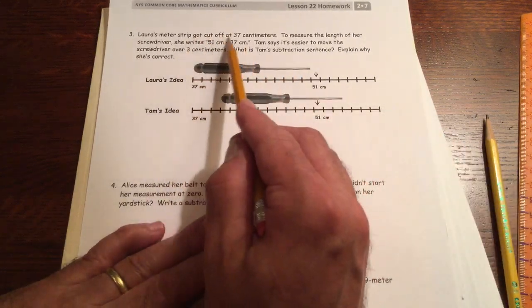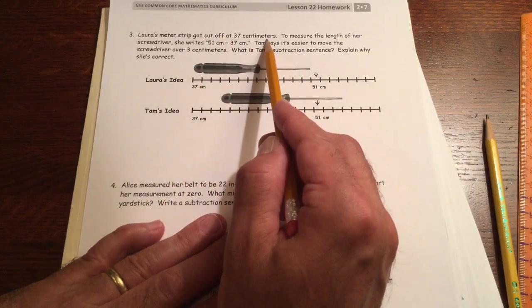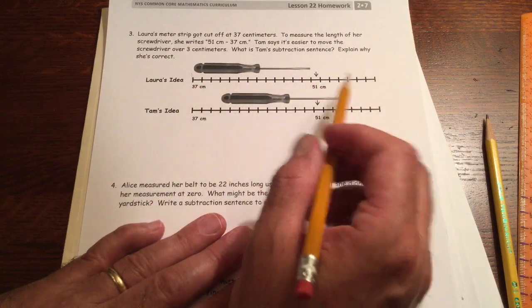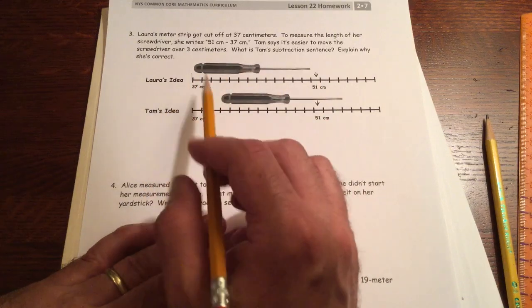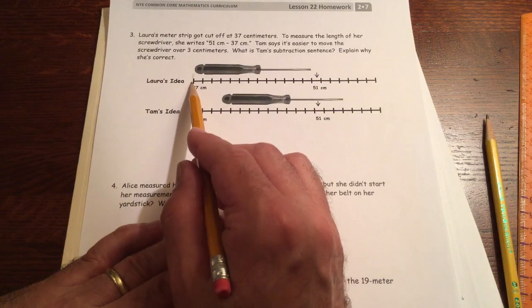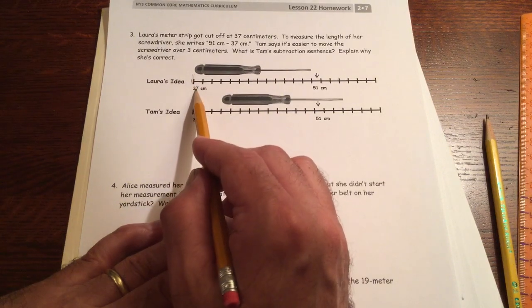Laura's meter strip got cut off at 37 centimeters. That means it just got cut. She had a piece of paper or something. It was a strip. It was a meter long. She's using it to measure things. And it got cut somewhere at the beginning, right at the 37 centimeter mark.